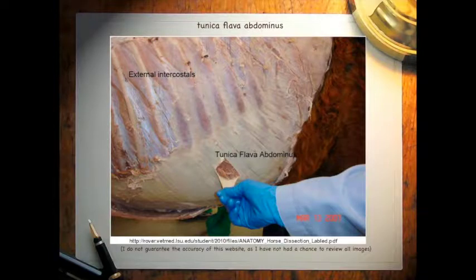Over the external abdominal oblique muscle, the deep fascia continues as the abdominal tunic, which blends with the aponeurosis of this muscle. The abdominal tunic, as seen in herbivores, contains a lot of elastic fiber giving it a yellow color, allowing it to support the heavy viscera of the abdomen.